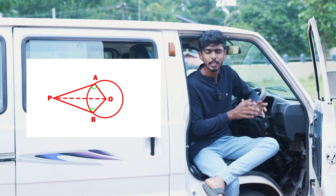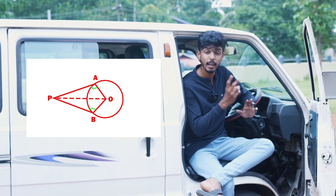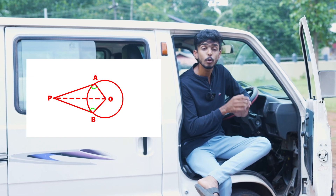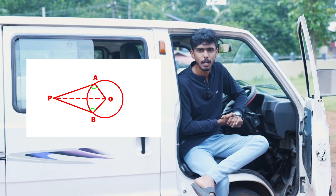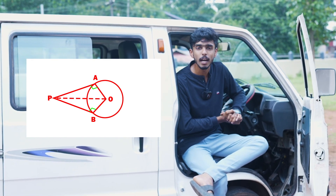I'll show you a figure. In this figure, there are two triangles: O, A, P and O, B, P. This is OP squared.